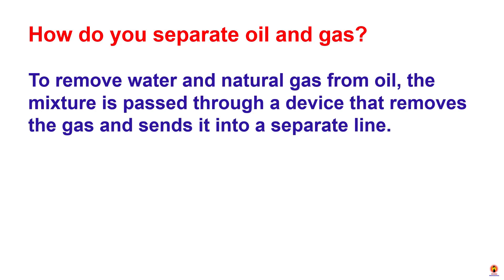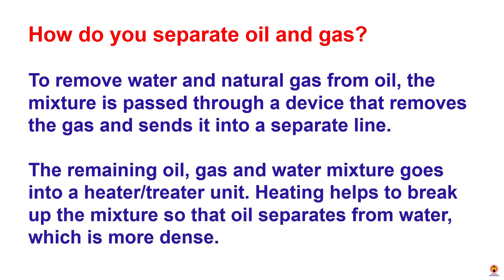How do you separate oil and gas? To remove water and natural gas from oil, the mixture is passed through a device that removes the gas and sends it into a separated line. The remaining oil, gas, and water mix goes into a heater-treater unit. Heating helps to break up the mixture so that oil separates from water, which is more dense.